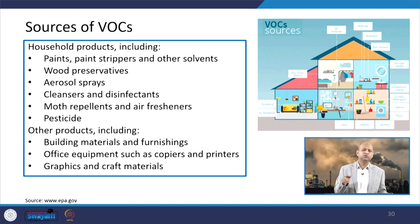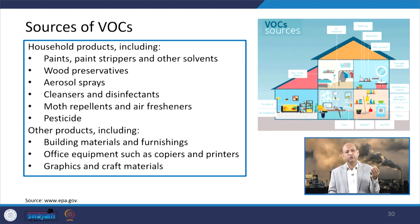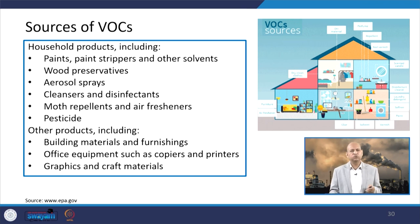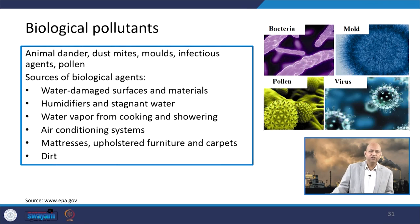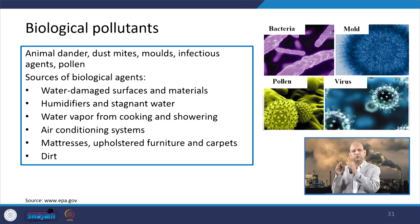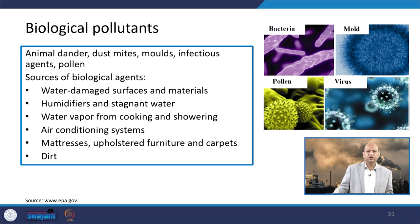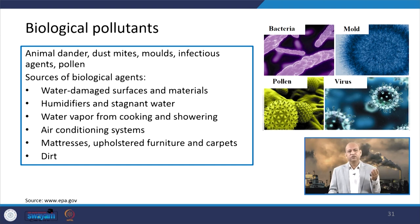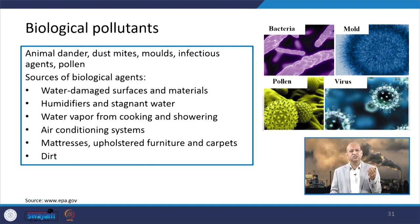Building materials, furniture, and office equipment such as copiers, photocopiers, printers, graphics, and craft materials can all be sources of VOCs. Biological pollutants can come from humid corners, moisture, leakage, or seepage. The presence of water-damaged surfaces, materials, humidifiers, or stagnant water in a building is not a healthy sign — these can be sources of biological pollutants.